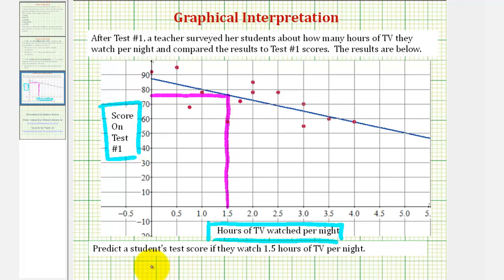So based upon the line of best fit, if a student was to watch 1.5 hours of TV per night, the prediction would be a test score of 76.